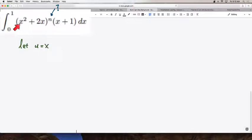So, a little inspection. If you took this inner function x squared plus 2x and differentiated it, you get 2x plus 2, which is twice as big as x plus 1, so it is a scale factor. So, I'm going to let u be x squared plus 2x,